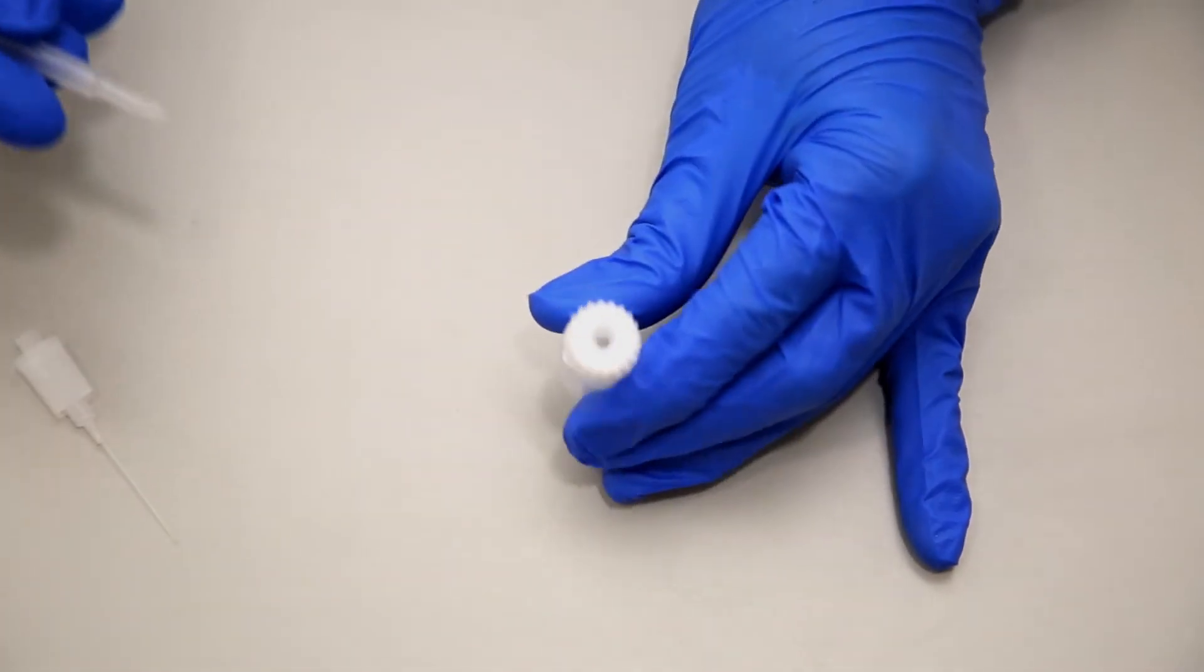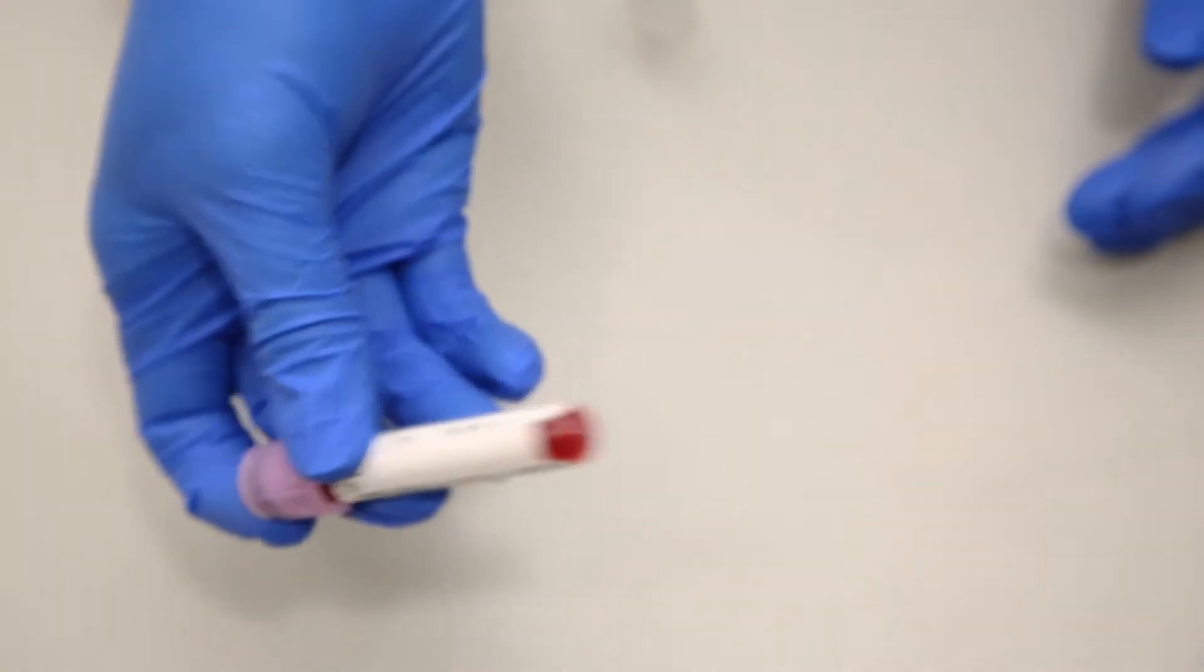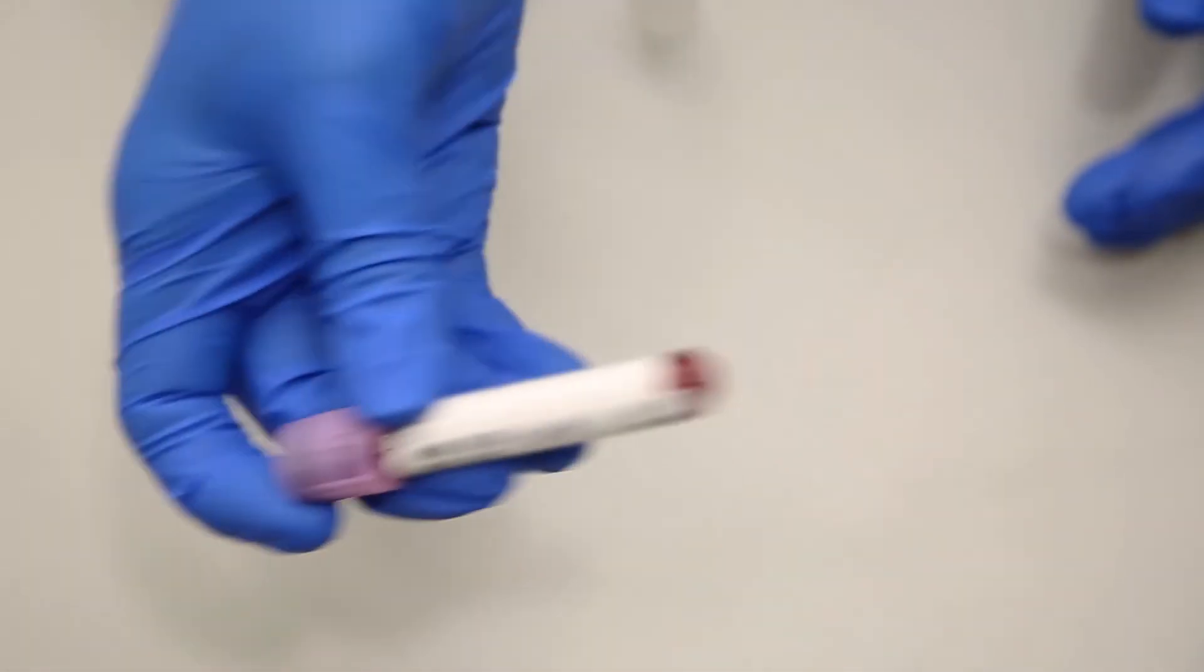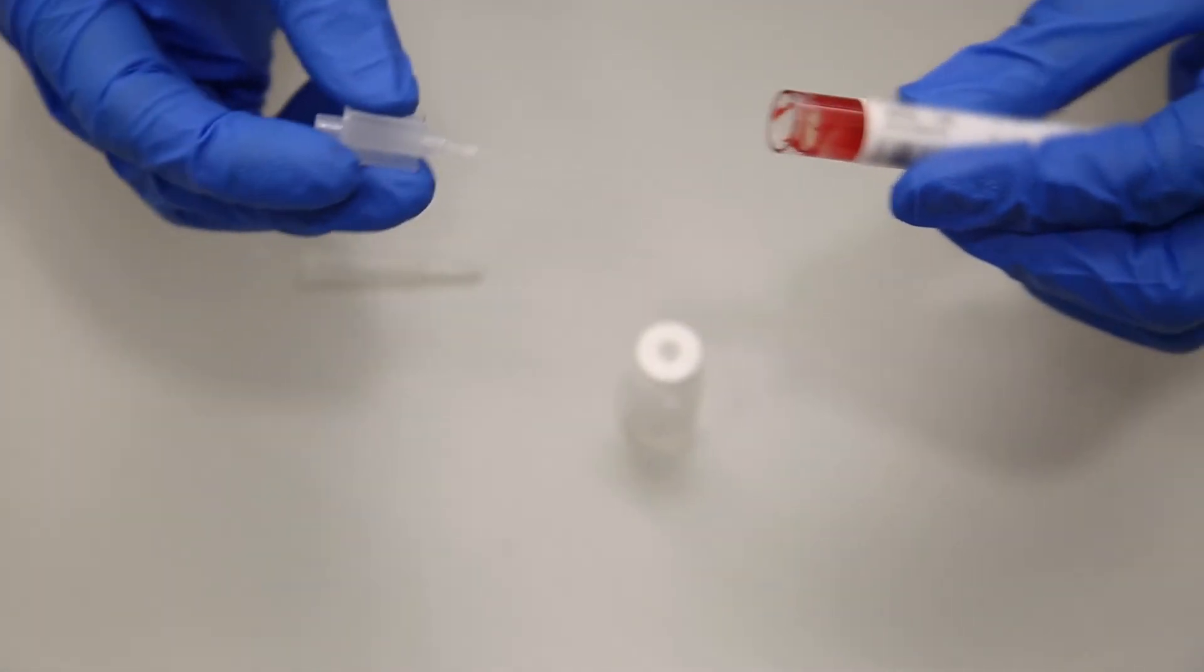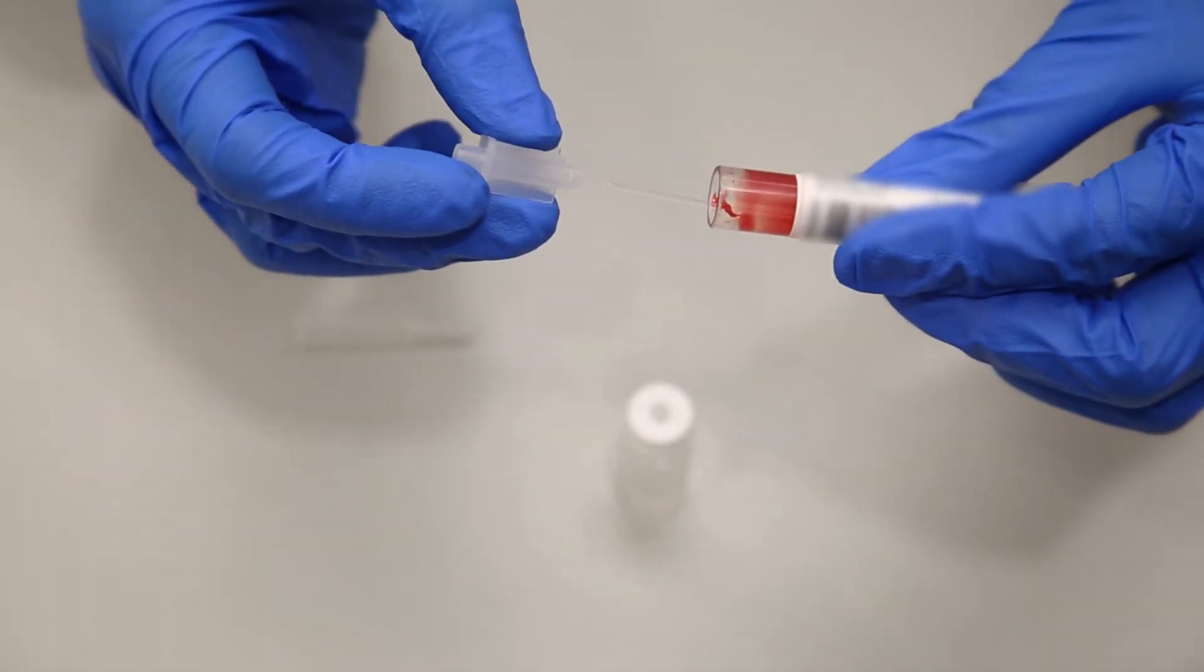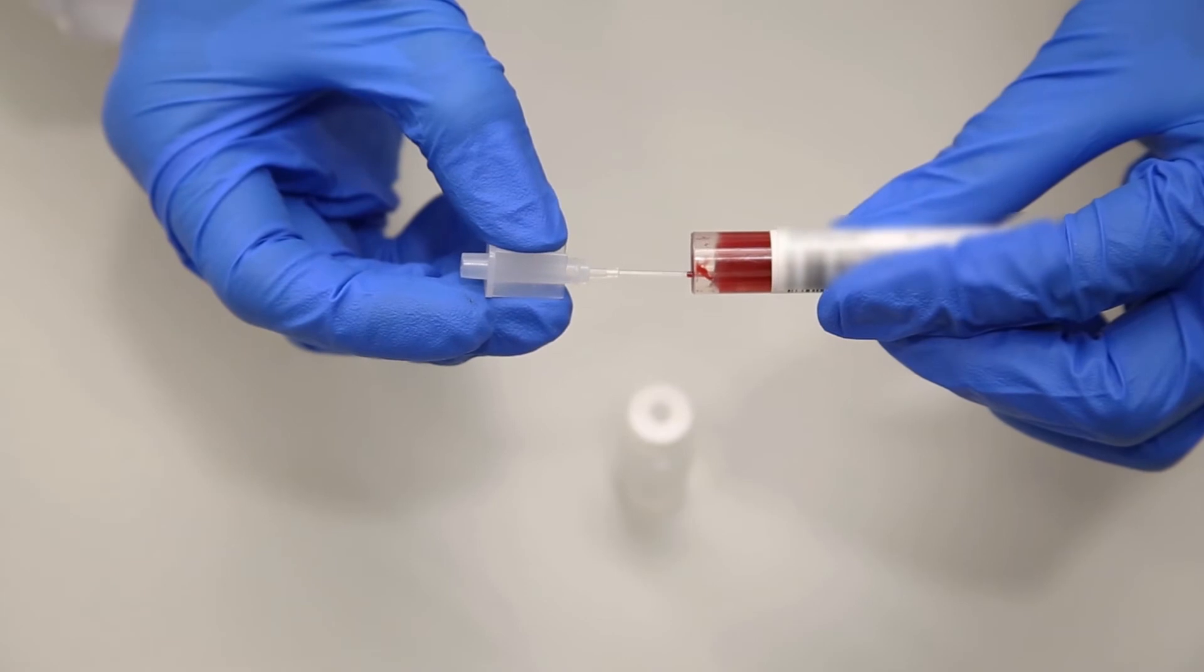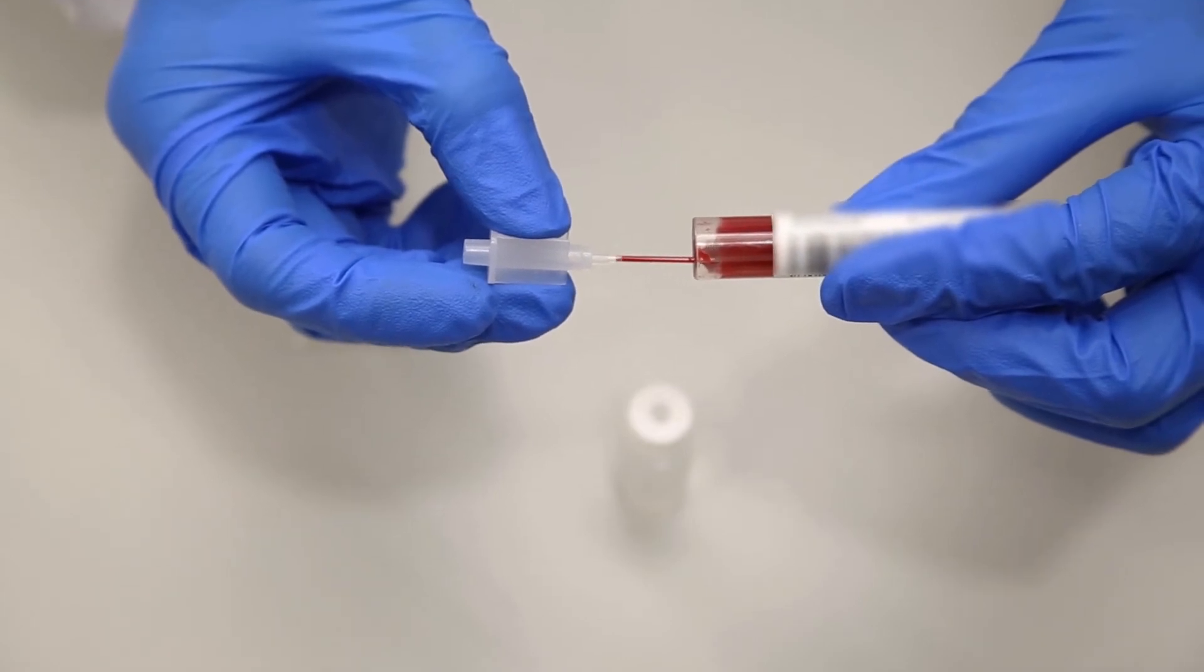Then remove the shield from the reservoir. Make sure to mix the specimen well before filling the pipet. Holding the pipet horizontally, touch the tip to the blood specimen and allow it to fill. This occurs automatically through capillary action.